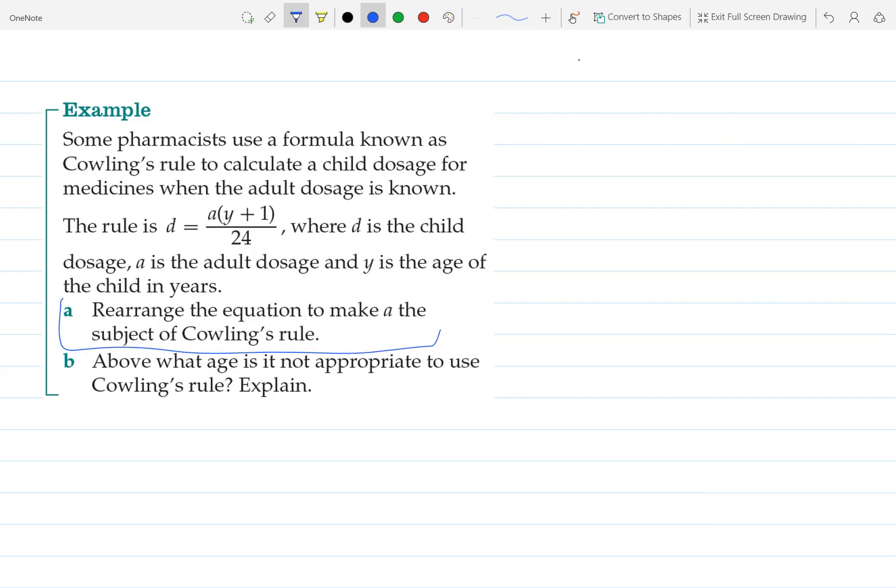The first part is asking us to rearrange the equation to make A the subject. So let's write out the equation again. D equals A times Y plus 1, all over 24.